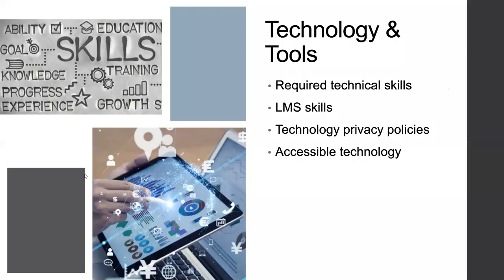On to Standard Two: technology and tools. This is about letting students know what required technical skills are and what they need to know in order to be successful in your course. Do they need to know how to convert a Word document to a PDF? Knowing these technical requirements will allow students to learn the skills before it becomes critical. Give them an opportunity to learn how to participate in a discussion forum or upload a file into an assignment in a low-stakes way.